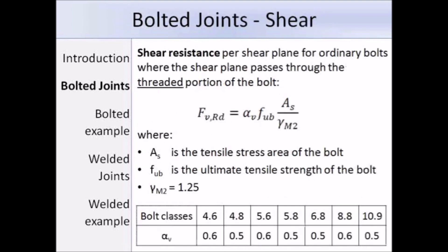The next check is for shear when the shear plane passes through the threaded portion of the bolt. The equation is alpha V times Fub times As over gamma M2. Alpha V can be found from the table at the bottom, with values taken directly from Table 3.4. As is the tensile stress area of the bolt from the blue book. Fub is the ultimate tensile strength of the bolt from Table 3.1. Gamma M2 is 1.25.